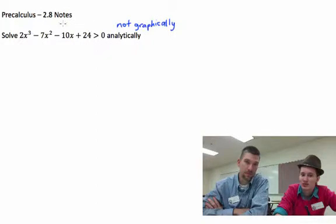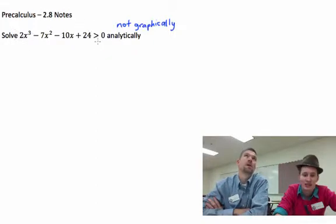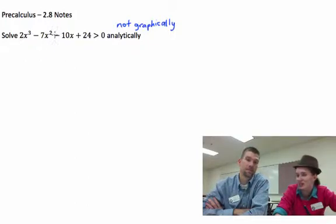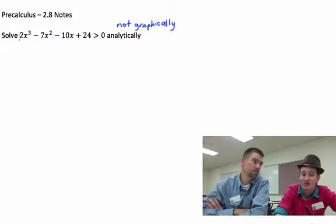I don't think that this is factorable. Factor by grouping - we can't factor by grouping. Factor by slide dividing - we cannot factor. We can't factor. So, Rational Zeros Theorem.